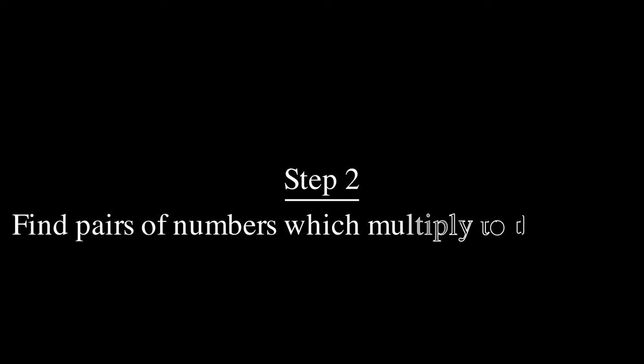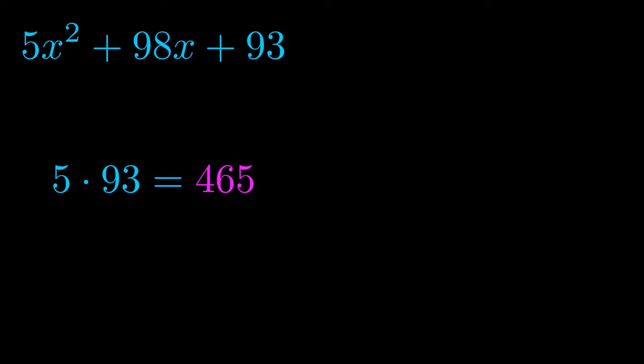Step two is to try to find all of the pairs which multiply to this number. Now turns out you don't really need to find all of them but go ahead and write down as many numbers as you can that multiply to the magenta value for now. Pause the video and resume when you're ready to continue.